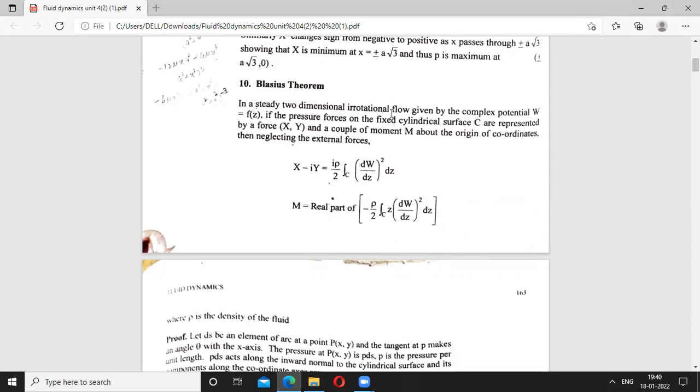In a study, two-dimensional irrotational flow given by complex potential W equals F of Z. If pressure forces on the fixed cylindrical surface C are represented by a force XY and a couple of moment M about the origin of coordinates, then neglecting the external forces, X plus iota Y equals iota rho by 2 integration over C, DW by DZ whole square DZ. Where M is the real part and rho is the constant of fluid.